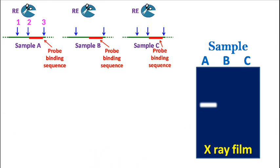Now, let's suppose sample B has lost a restriction site due to mutation. In this case, only one band will be observed and this band will be very large.